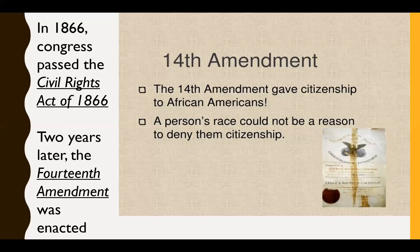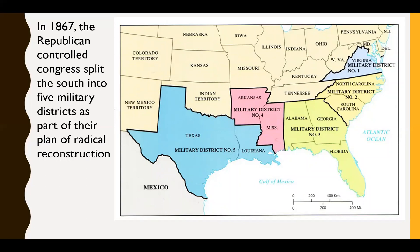The Radical Republicans implemented measures to ensure the equality of African Americans. President Johnson tried to veto these things but lacked the power — Congress used their majority to override his vetoes. Under Radical Reconstruction, the South was divided into five military districts, as seen on screen, each under the command of a US general. Johnson vetoed this act as well, but Congress again overrode his veto.